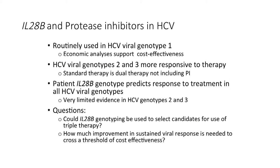IL-28B and protease inhibitors in hepatitis C: this was routinely used with hepatitis C viral genotype 1, which is the most treatment-resistant viral genotype, and there are a number of economic analyses that supported cost-effectiveness. Viral genotypes 2 and 3 are much more responsive to therapy, so the question was whether to use protease inhibitors as part of therapy. Standard therapy is dual therapy and did not include protease inhibitors. However, even with genotypes 2 and 3, this patient genotype in IL-28B predicts response to treatment across all those genotypes. The question was: could IL-28B genotyping be used to select candidates for triple therapy for these more responsive genotypes?